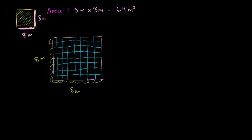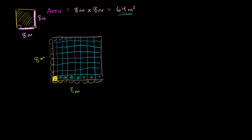So when we're talking about 64 square meters, we're literally counting each of the square meters. A square meter is a two-dimensional measurement that's 1 meter on each side. What I'm shading here in yellow is 1 square meter. In each row we're going to have 1, 2, 3, 4, 5, 6, 7, 8 square meters. And then we have 8 rows, so we're going to have 8 times 8 square meters, or 64 meters squared.